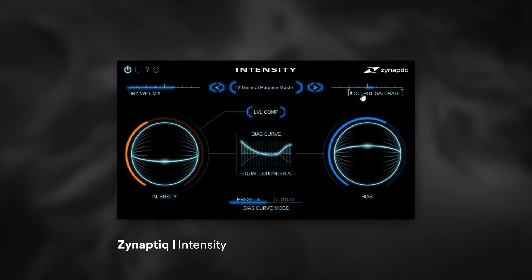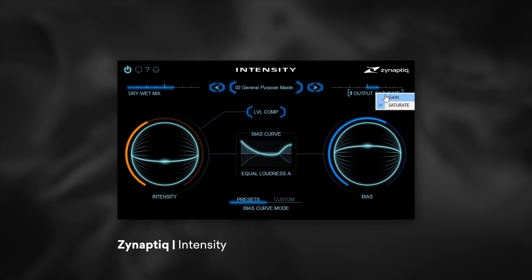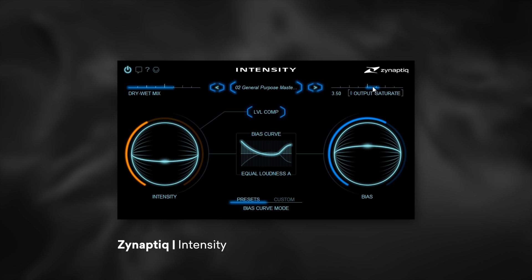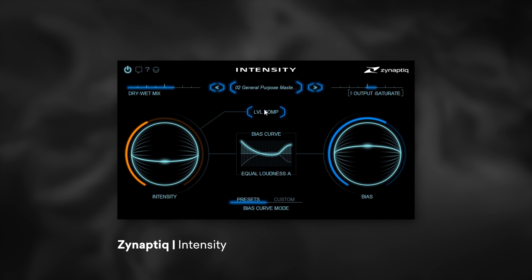Now we have the output, and as you can see it says Output Saturation — or Saturate. We can adjust that; we can have more or less saturation. And if we want, we can just go to a straight output gain stage by clicking this output menu right here. You switch between gain staging and saturation, so that's very cool.